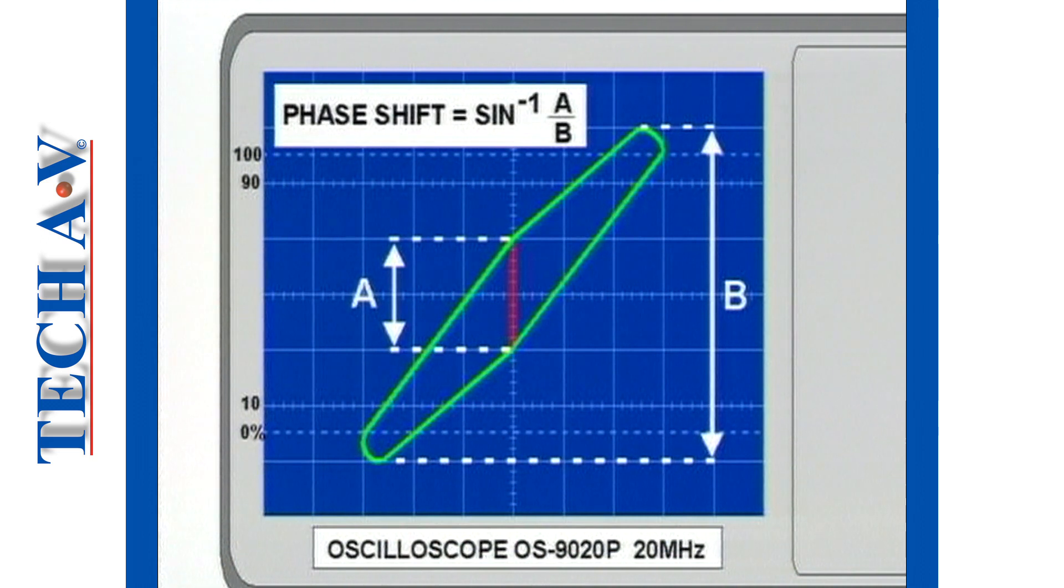To calculate the phase shift, the formula is phase shift equals sine to the minus 1 A over B. Or we may say the phase shift between the two signals is described by the angle whose sine is equal to the ratio of A over B.